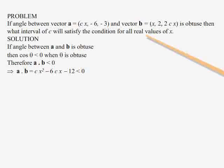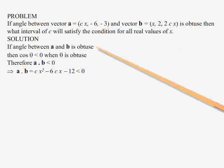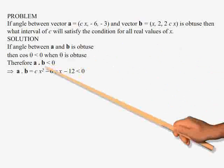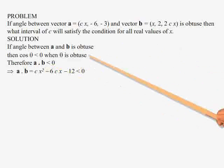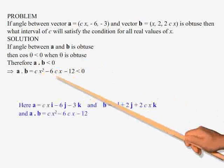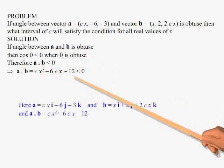We know that if the angle between a and b is obtuse, then a dot b should be less than 0. This is because the cosine of an obtuse angle is always negative. This implies c x squared minus 6c x minus 12 is less than 0.